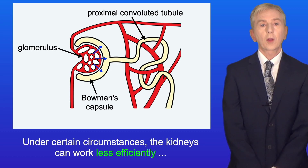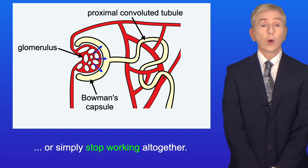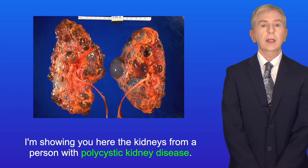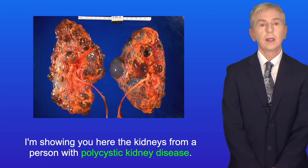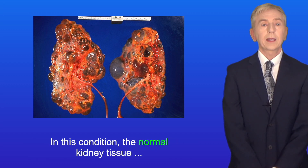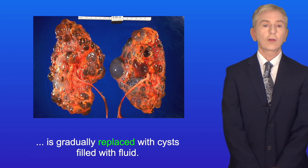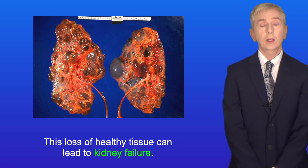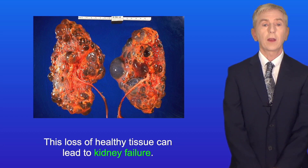Now, under certain circumstances, the kidneys can work less efficiently or simply stop working altogether. This is called kidney failure. I'm showing you here the kidneys from a person with polycystic kidney disease. In this condition, the normal kidney tissue is gradually replaced with cysts filled with fluid, and this loss of healthy tissue can lead to kidney failure.